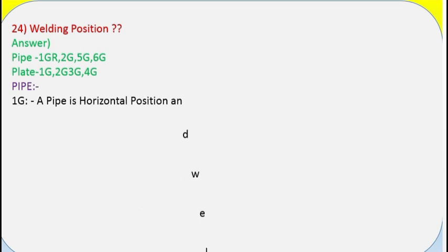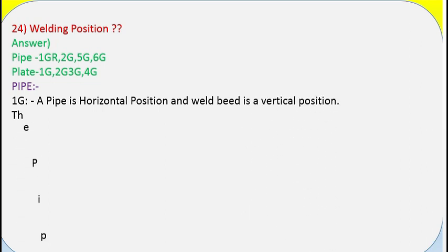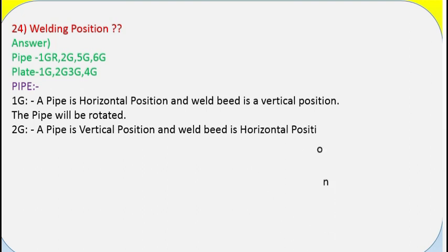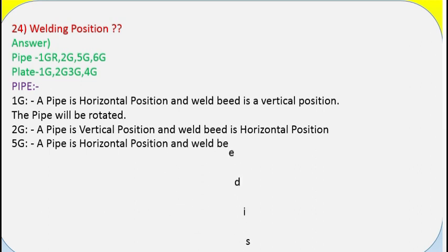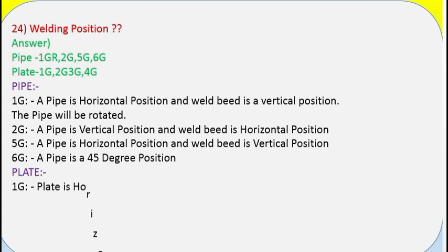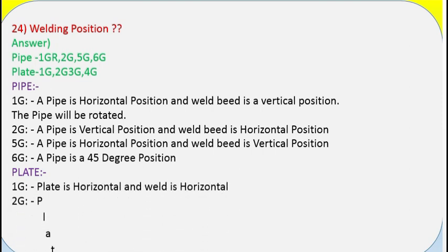Question 24: Welding positions — pipe. Answer: Pipe positions are 1G, 2G, 5G, and 6G. 1G: pipe is in horizontal position and weld bead is vertical — the pipe will be rotated. 2G: pipe is in vertical position and weld bead is horizontal. 5G: pipe is in horizontal position and weld bead is vertical — pipe is fixed. 6G: pipe is at a 45-degree position.